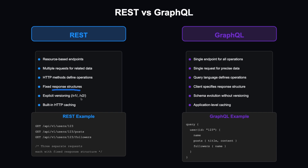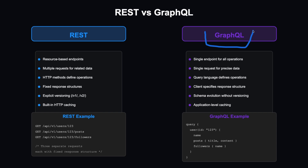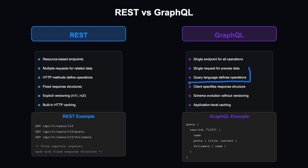REST response structures are fixed — the same endpoint always returns the same structure, even if specific data values change. REST also provides explicit versioning, such as v1 or v2, and supports HTTP caching via request headers. In contrast, GraphQL uses a single endpoint for all operations, and a single request retrieves precisely the data needed using the GraphQL query language.